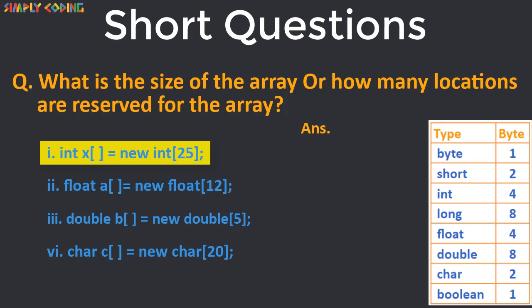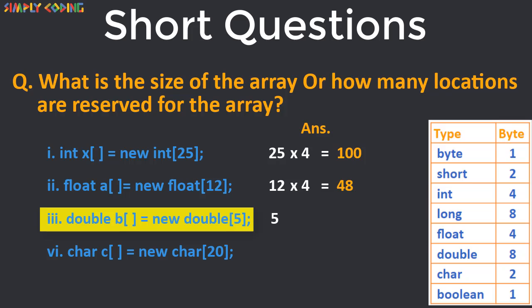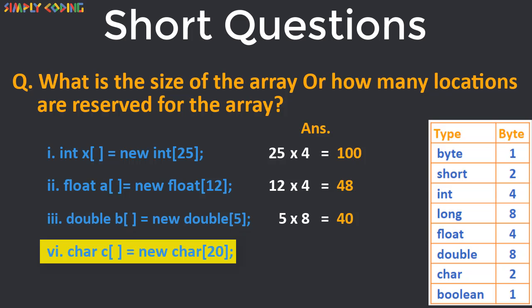Here in the first question there is an array of int of size 25 so it will take 100 bytes of space. Next is float which also requires 4 bytes so it takes 4 into 12 which is 48 bytes of space. Next is double array of size 5. Since double takes 8 bytes this array takes up 40 bytes. In the next question each char takes 2 bytes so array of 20 takes in 40 bytes.